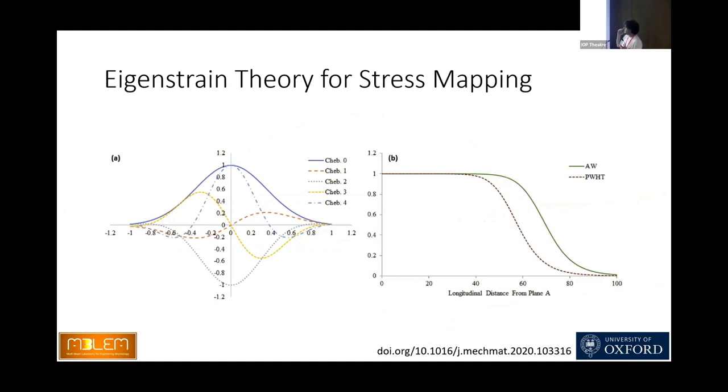So in this case, in the weld problem, we used some predictions about the distributions of the eigenstrains and determined our basis functions according to initial estimations. But to use eigenstrain theory for tomography, we must not rely on this kind of regularization functions or simplifying assumptions.